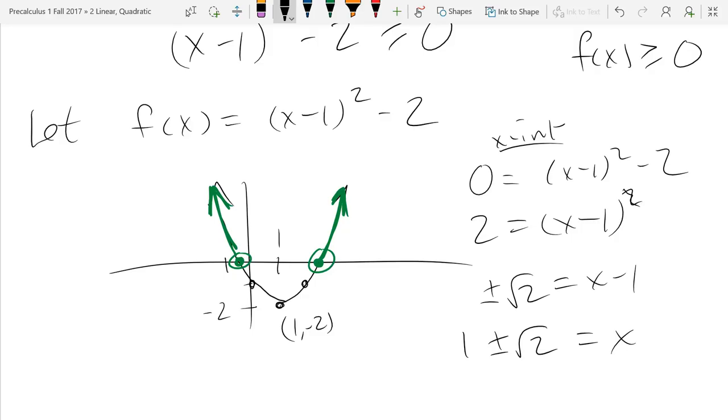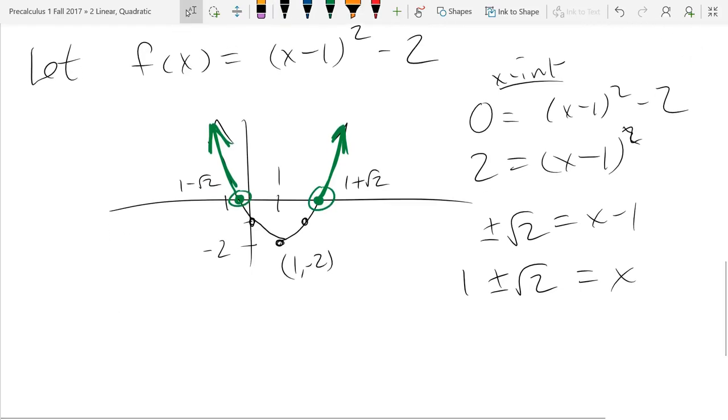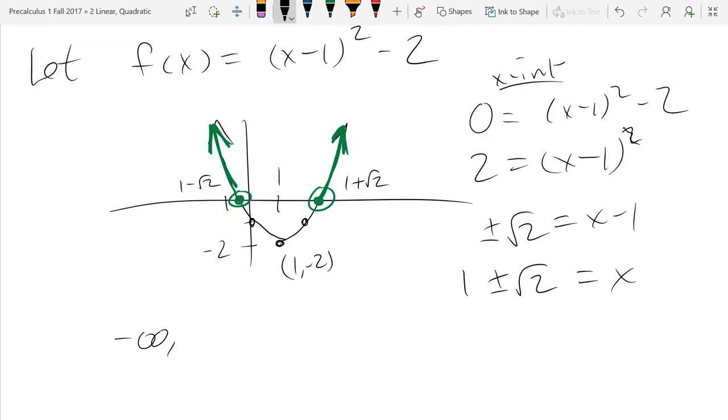The one on the right is going to be 1 plus square root 2, the one on the left is 1 minus square root 2. We're ready to line up the answer. All the x values that are above the x-axis are everything from negative infinity to 1 minus square root 2, union from 1 plus square root 2 up to positive infinity.